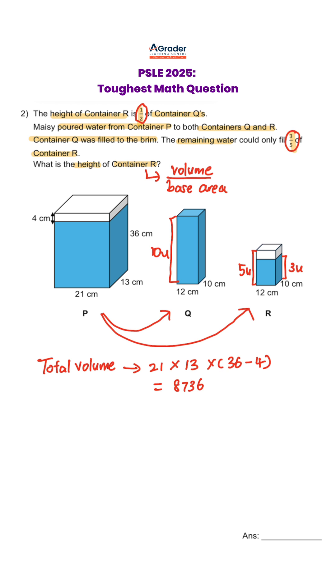We know that this is actually 10 units plus 3 units equals 8,736. One unit will be 8,736 divided by 13, which gives us 672.